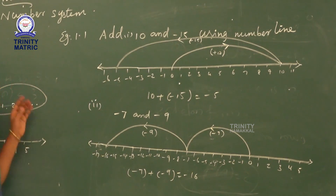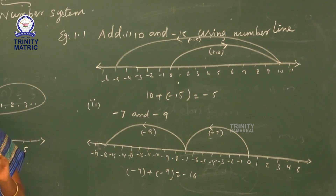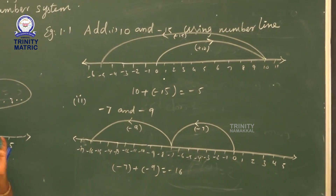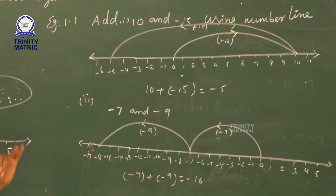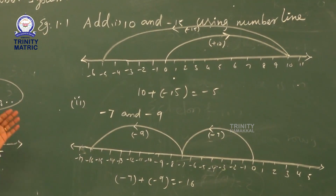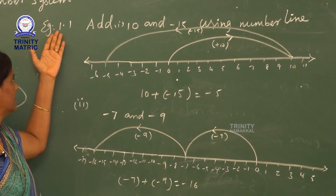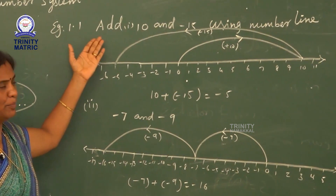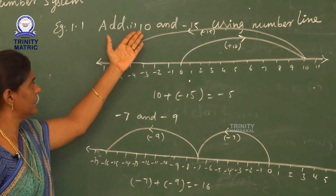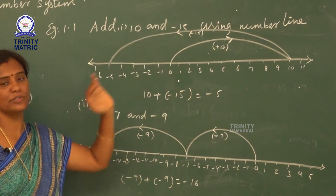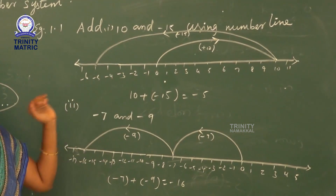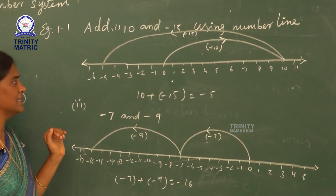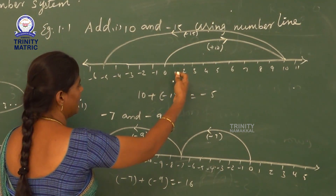There are two methods: one is the direct method and the other is the number line method. See, example 1.1 — add 10 and minus 15 using the number line. We add the integers using the number line. This is the number line.